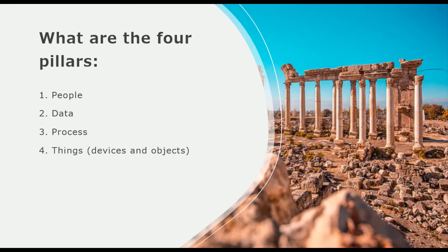The four pillars are: People, Data, Process, and Things. People — that's you or I, the people who are going to be using the service, the internet, the connection. Data is so important. If data is ever out of date, not valid, biased, or illegible, then the whole internet or website becomes invalidated and often people will stop using it.